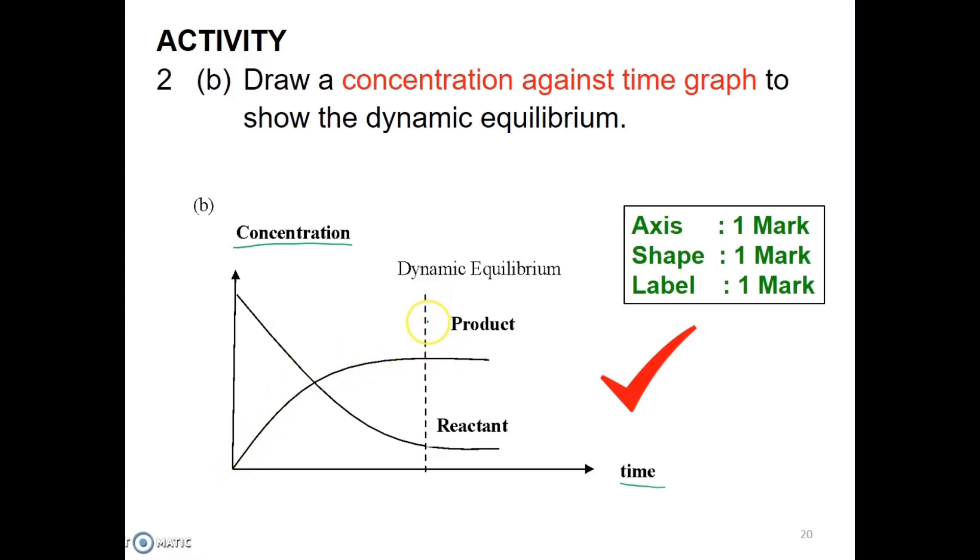And at the time where the concentration of reactant and product are unchanged and become constant, this is the time where the reaction has achieved equilibrium. So this one, you should label compulsory, and this line also is compulsory for you to label and indicates the time that reaction has achieved equilibrium.